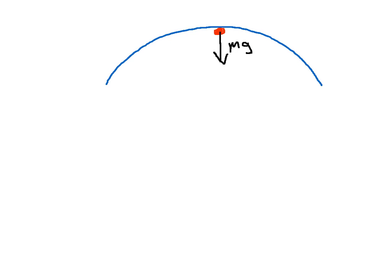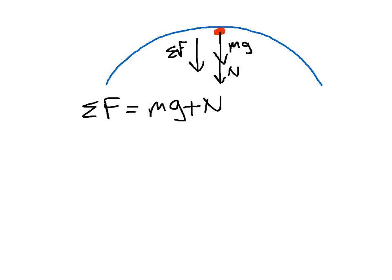At the top of the loop, again we're considering two forces: a weight force directly down, and the normal reaction force between the surface and the vehicle will again act down. Because this is in circular motion, the net force — the sum of these two forces — must point directly down as well. Looking at the direction of these three arrows, we see they're all in the same direction, and so they will all take a positive sign. So net force equals mg plus N in this situation.